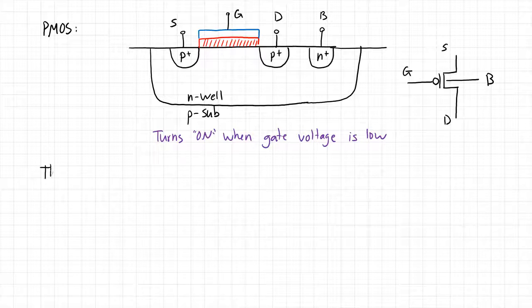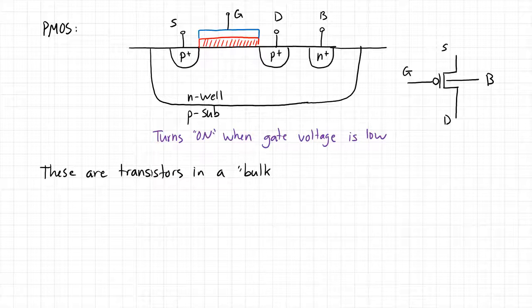What we've drawn here are transistors in what we call a bulk CMOS process. What we mean by this is that the substrate is common to all other transistors on your chip, typically a P-type substrate, which means the bulk of all NMOS transistors are all connected together. We'll get into some of these details more later in the course.